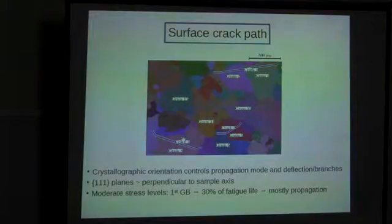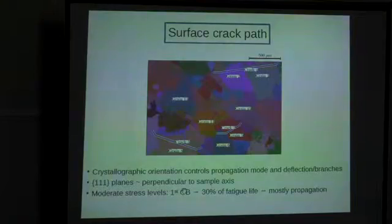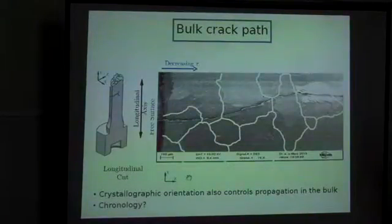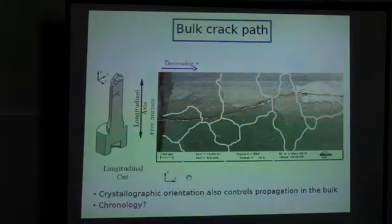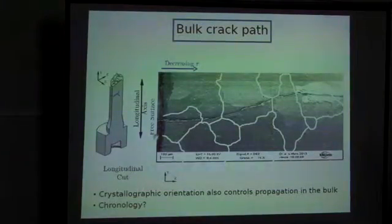We also know that reaching the first grain boundary for a surface crack takes approximately one-third of the fatigue life, so a lot of the fatigue life is devoted to propagation of the crack inside the sample. Of course, you would like to know what's happening in the bulk. One way to do this is to cut and polish the sample and have a look — this is what Itzya has been doing. You can see that the crack grows towards the interior, and it keeps this crystallographic aspect, still interacting a lot with the microstructure. But of course, there is no chronology this way.